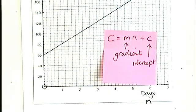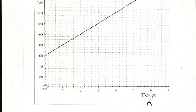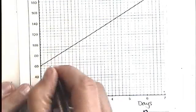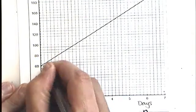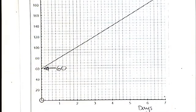We still need to find out the gradient and the intercept. To find the intercept is really easy. You just look at where your graph crosses the y axis, and that is at this point here, 60. So our value of c, our y intercept, is equal to 60.